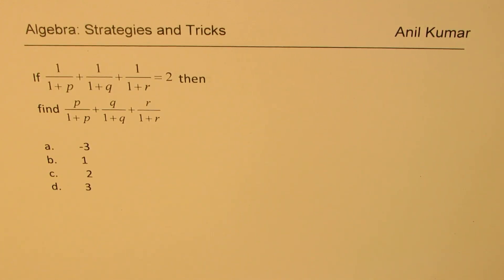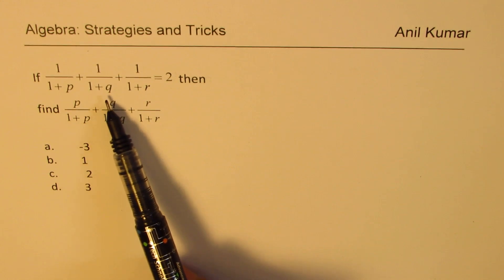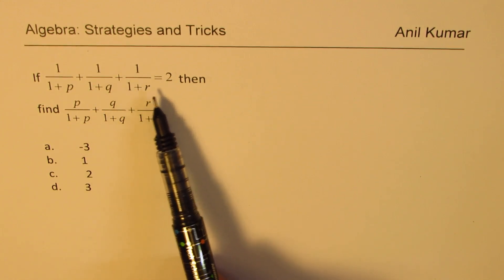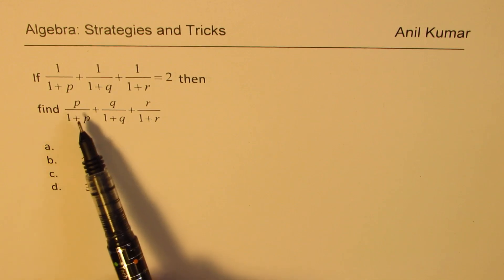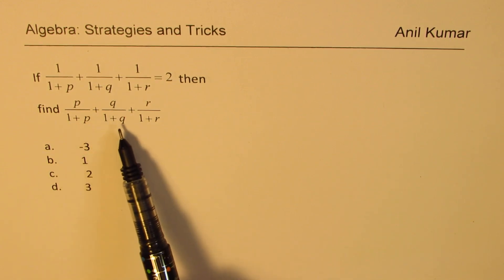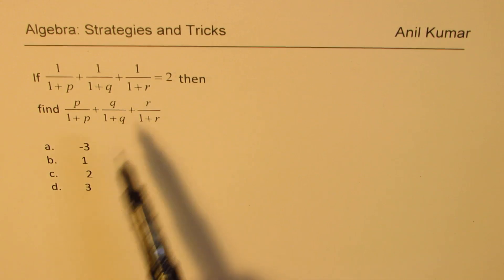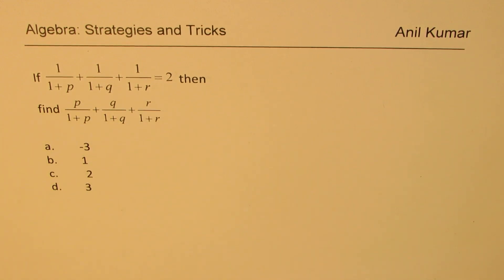We are given that 1 over (1+P) plus 1 over (1+Q) plus 1 over (1+R) equals 2, and we need to find the value of P over (1+P) plus Q over (1+Q) plus R over (1+R). To solve such a question, you could substitute some values and figure out the answer. That's one way of doing it.